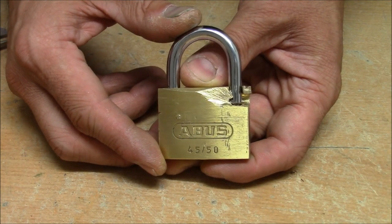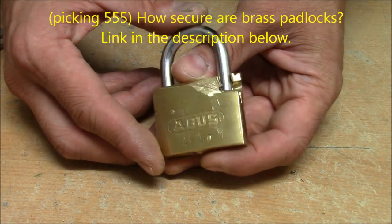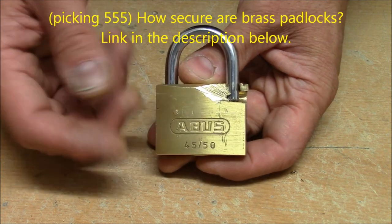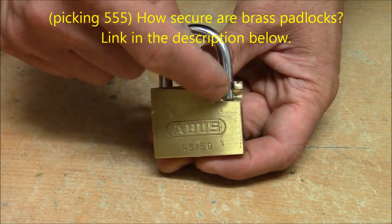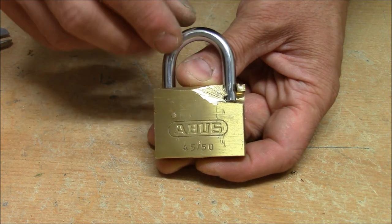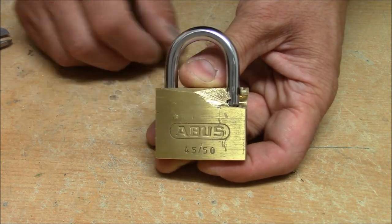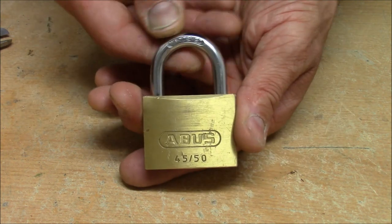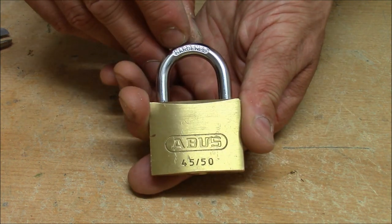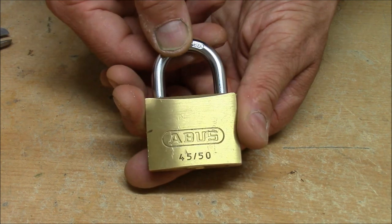Welcome to an update on my last video where I showed you how vulnerable these brass padlocks are because you can cut open a little window here on the side and twist open the shackle. I was asked several times how much effort it actually would be to cut through the hardened steel shackle, and so I want to test this.